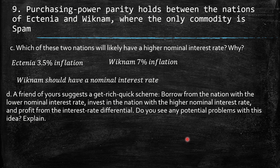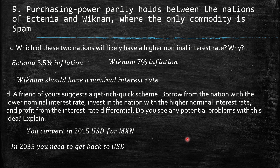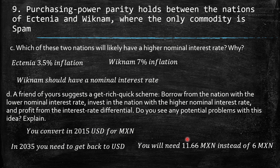Part D: a friend suggests a get-rich-quick scheme — borrow from the nation with the lower nominal interest rate, invest in the nation with the higher nominal interest rate, and profit from the interest rate differential. The problem is: in 2015 you convert Ictanian dollars to Wignam pesos, but in 2035 you need to convert back. At that point you will need 11.66 Wignam pesos instead of 6 per dollar — so you may earn from the interest rate but lose from the exchange rate depreciation of that currency.